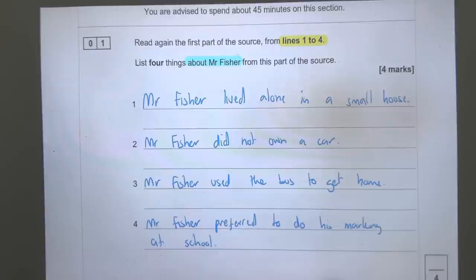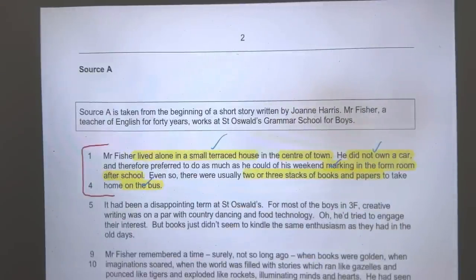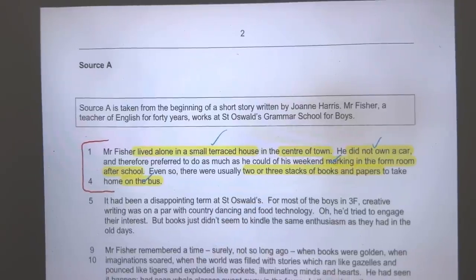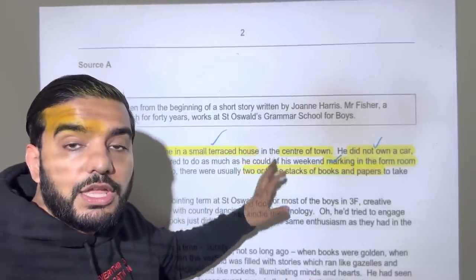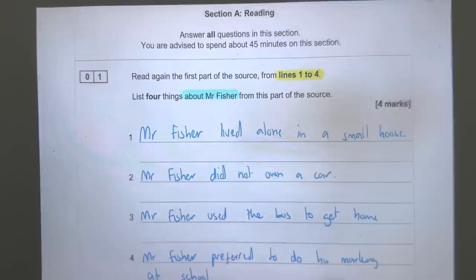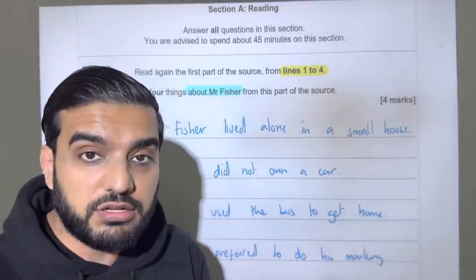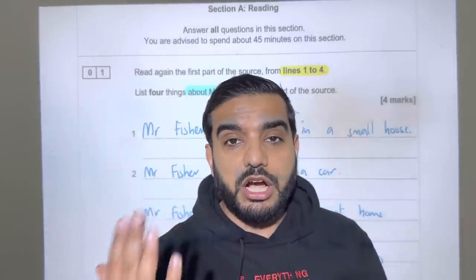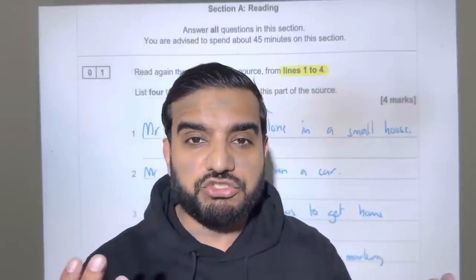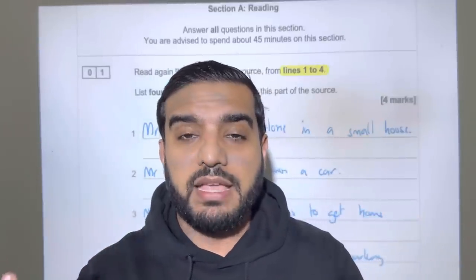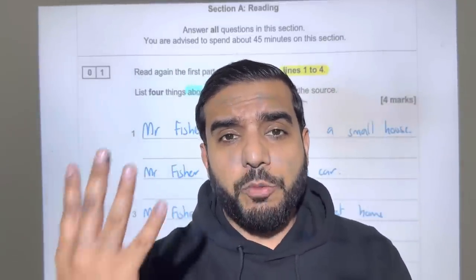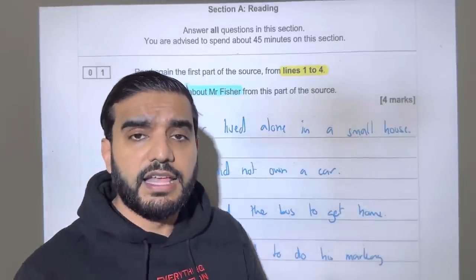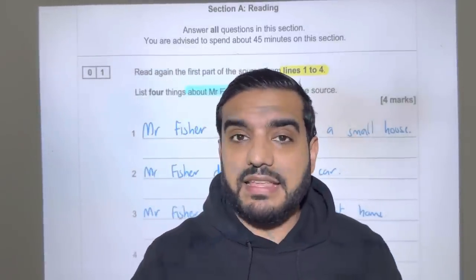There we have it — four answers based upon what we selected from our extract. Nothing complicated, but the one rule you must stick with is that whatever four answers you go for, you must be able to pick them from the paragraph. If you can't prove any of these answers from the extract, you're going to get stuck. Read the question first, then read the extract picking everything relevant to the question, then put the source and question side by side and select your four points — all written in full sentences, all provable from the extract.